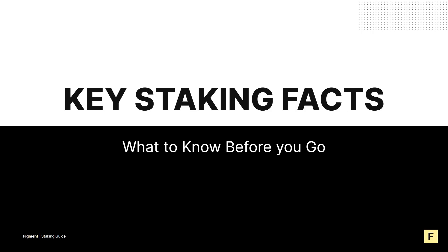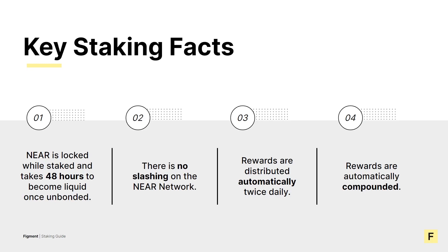Now that we know why NIR, let's look at some key staking facts to keep in mind when delegating NIR. NIR is locked when staked and takes 48 hours to become liquid once unbonded. You don't earn any rewards during this unbonding period. There's no slashing on the NIR network, so that's good news, and rewards are distributed automatically twice a day.